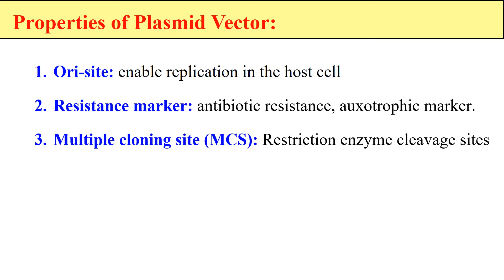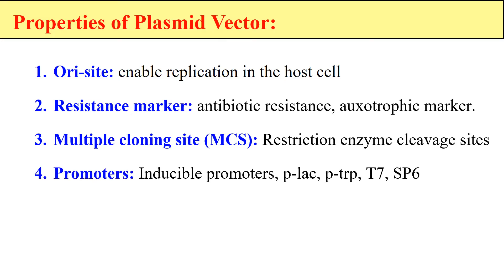The next property is multiple cloning sites (MCS). This plasmid vector has multiple cloning sites which contain restriction sites, so we can cleave these MCS with restriction enzymes and insert our gene of interest into the plasmid vector. Beside this, the plasmid vector can also have a promoter. If the vector is an expression vector, we can include a promoter — which is the sequence from where transcription of the gene starts.